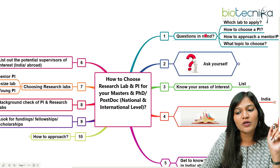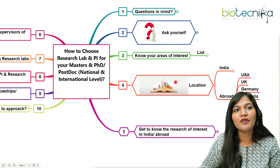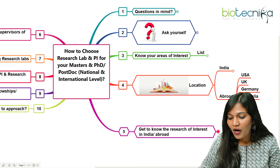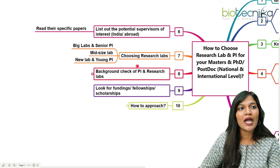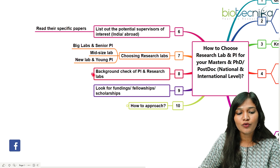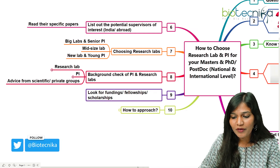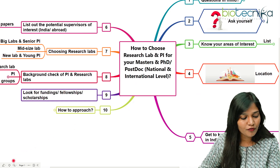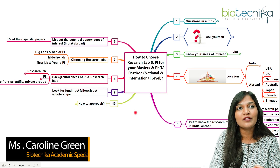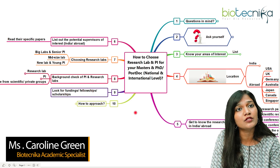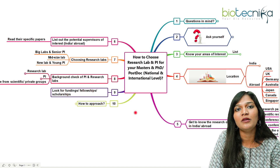In summary, ask yourself all the important questions, find your research interest, decide whether you want to go to India or abroad, identify ways to find your PI through reading papers and meeting people, read their specific papers, check the research lab where the PI works, do a background check of both the PI and the lab, look for funding fellowships and scholarships, and finally approach them. Whether it is for your master's project, PhD, or postdoctoral position — in India or abroad — following these steps will make the process very straightforward. If you have any questions or suggestions, put them in the comment section. Thank you.